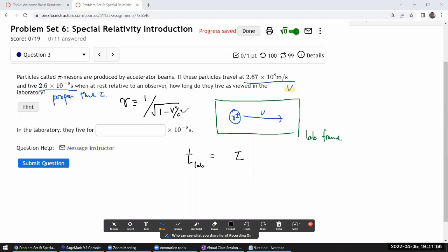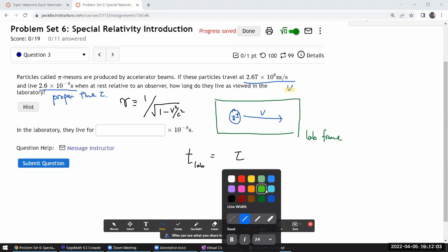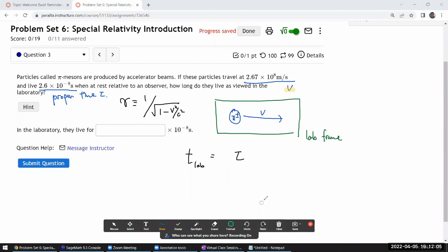So there's a property of the gamma factor that helps you get an intuitive feel for what it does. So that property is that gamma factor is always equal to or greater than one.